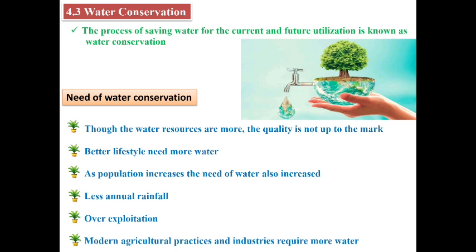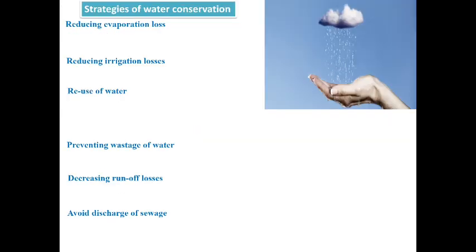Our better lifestyles also require more fresh water. As population increases, the requirement of water also increases. If the average rainfall gets reduced, the groundwater table cannot be recharged adequately. The over-exploitation of groundwater leads to drought, which can rapidly cause famine. So we are in need to conserve water to avoid famine, and our modern agricultural practices and industrial activities require more fresh water.